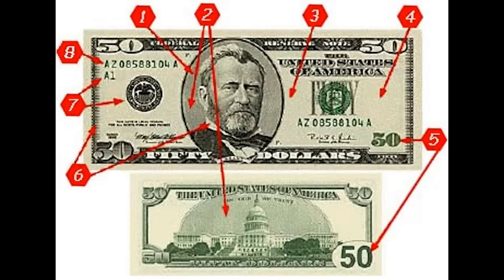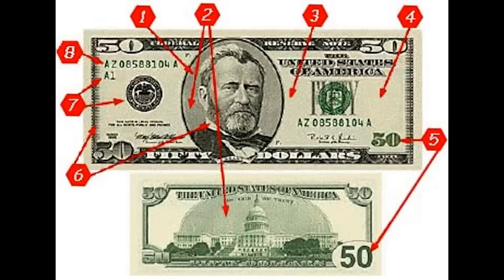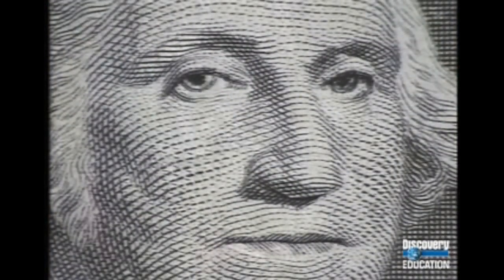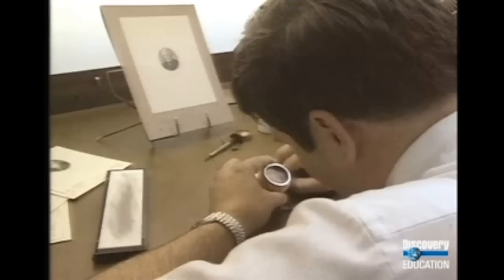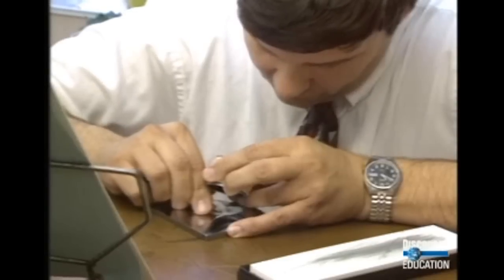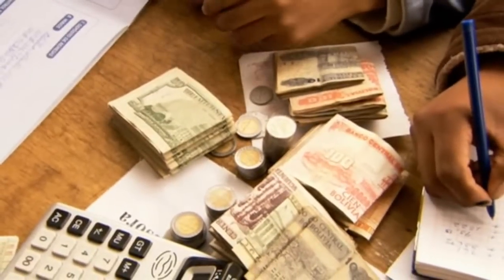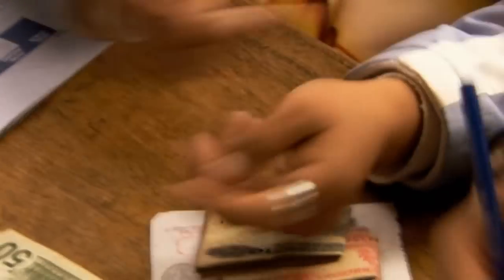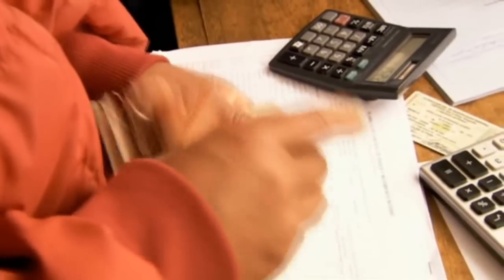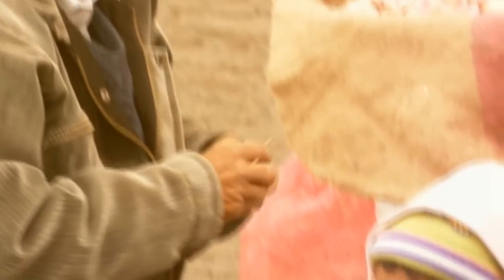One downfall of paper money is dealing with counterfeiting. However, most countries have anti-counterfeiting mechanisms, such as engraving portraits so delicately that some paper money has 11 lines per millimeter in the portraits of presidents. This universal innovation has changed the way the world purchases products and services. Money is what makes the world go round — and now it's in the form of paper.